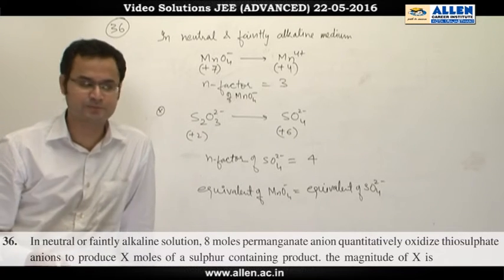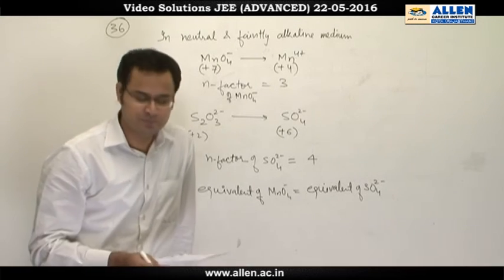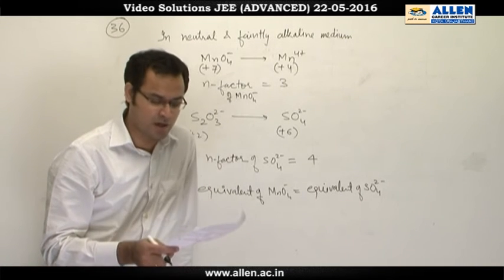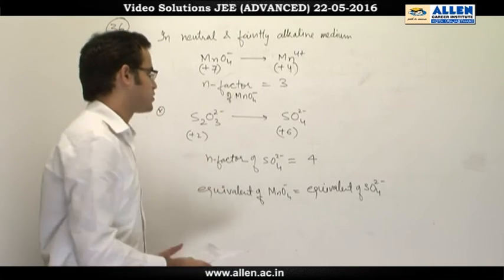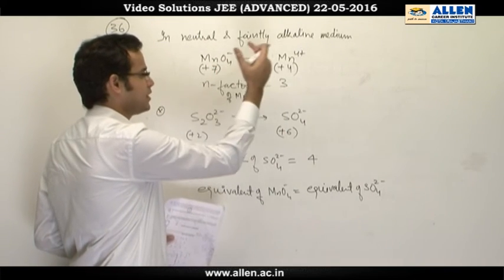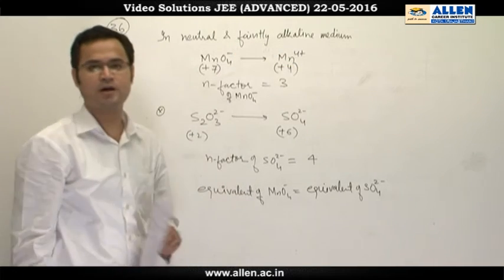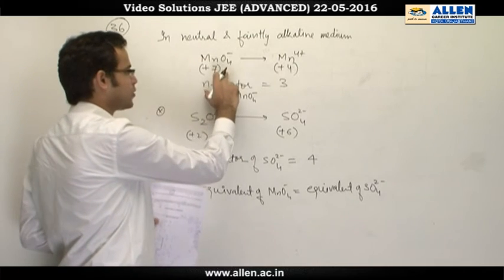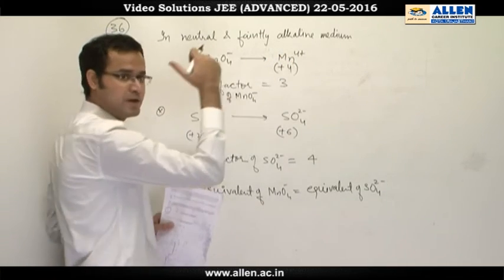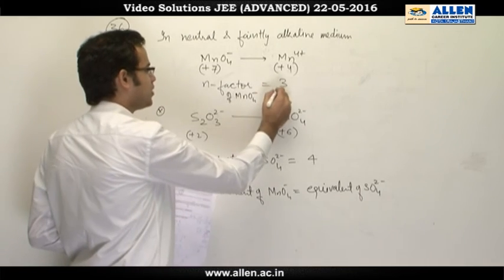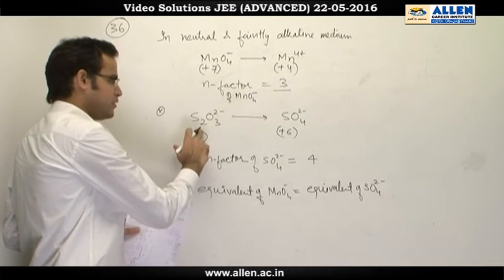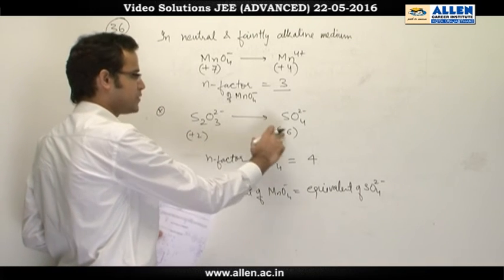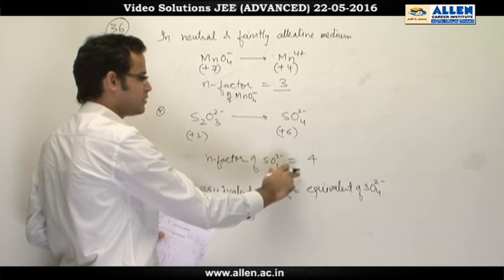Question number 36. KMnO4 is used to oxidize thiosulfate anion. MnO4- in faintly alkaline medium converts into MnO2. First, if we find out MnO4- converting into MnO2, because the medium is faintly alkaline, n-factor is 3. Thiosulfate anion converts into sulfate. If we check the oxidation state, then sulfur is +2, here sulfur is +6, change in oxidation number is 4. N-factor is 4.